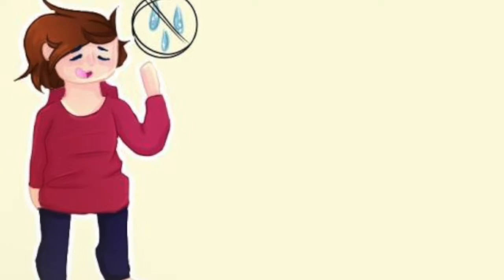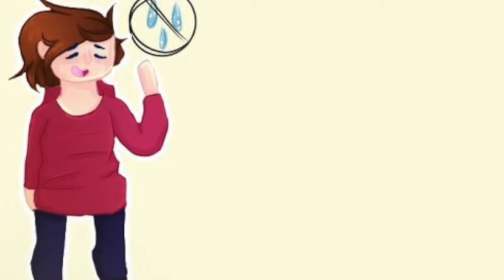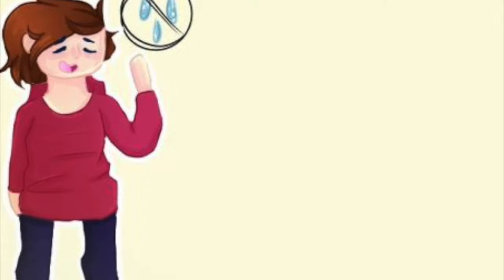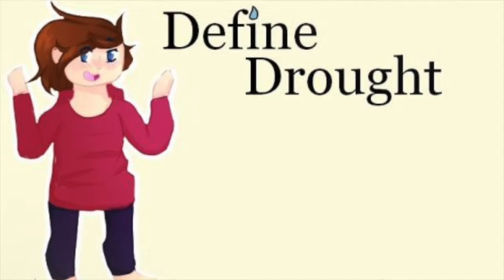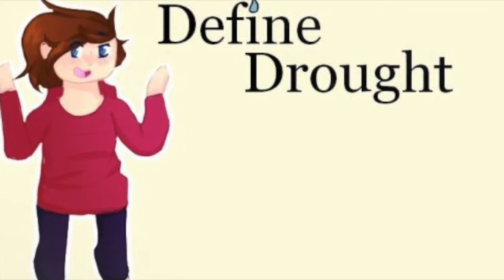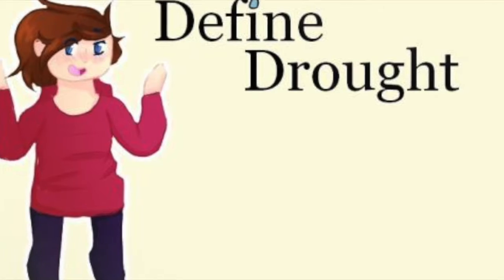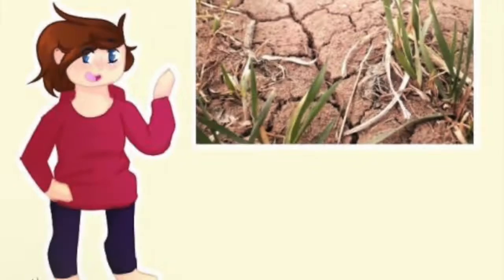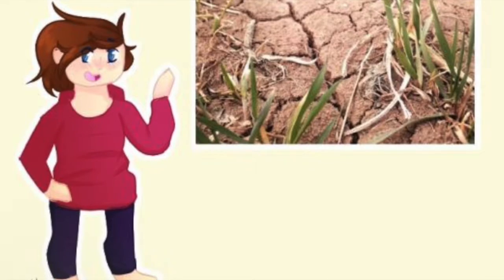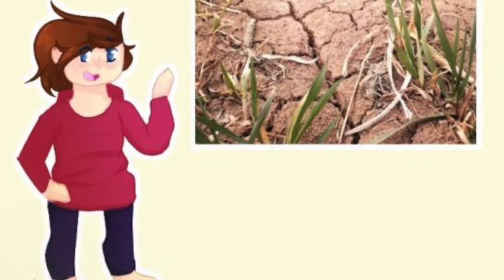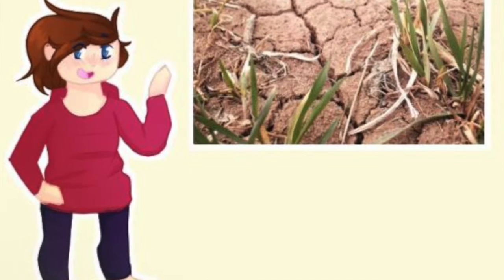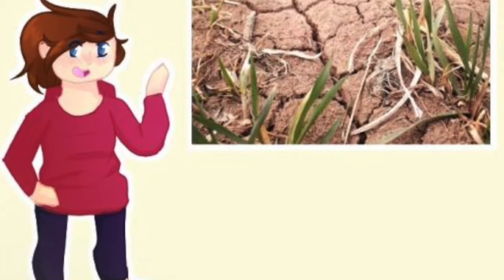Hey, I'm Ashlyn Jensen, and we are all here to talk about droughts — where and how they happen. What is a drought? A drought is a period of below average precipitation in a given region, resulting in prolonged shortages in water supply, whether atmospheric, surface water, or groundwater.